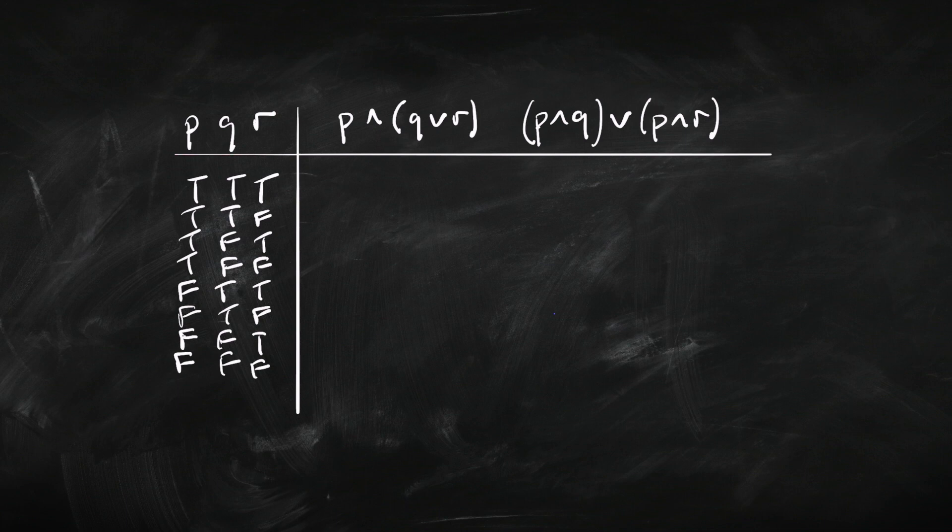Remember, start column by column on the right going TF, TF, TF, TF. Then do the middle column going TT, FF, TT, FF. And then the leftmost column going four T's, four F's. That way you won't miss any out.